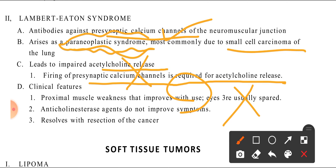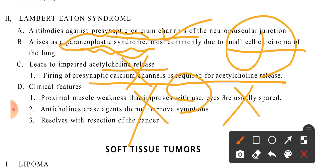Lambert-Eaton is the opposite of myasthenia gravis. Acetylcholinesterase inhibitors do not improve symptoms in Lambert-Eaton. The treatment involves resection of the associated cancer — specifically small cell carcinoma of the lung — and removing it improves the condition.